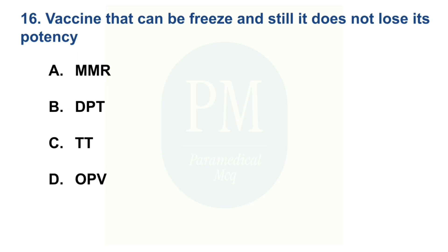Which vaccine can be frozen and still does not lose its potency? Option A: MMR. Option B: DPT. Option C: TT. Option D: OPV. The correct option is Option D: OPV.